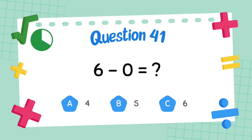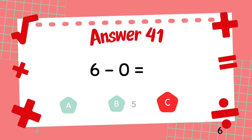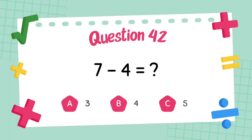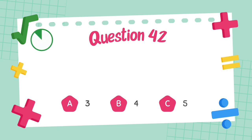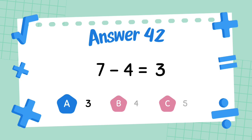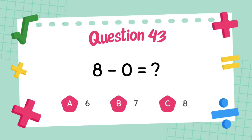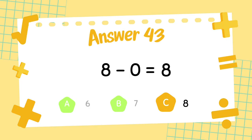What is 9 minus 8? What is 7 minus 4? The answer is 3. What is 8 minus 0? The answer is 8.